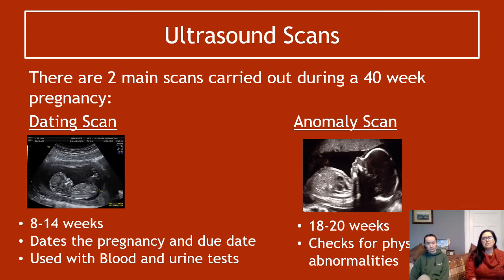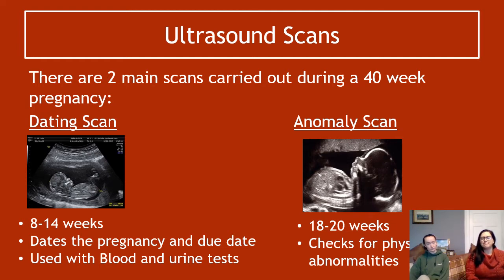The dating scan happens at eight to 14 weeks — sometime within that window it dates the pregnancy — and it's used in combination with blood and urine tests to look for any possible issues that are arising.